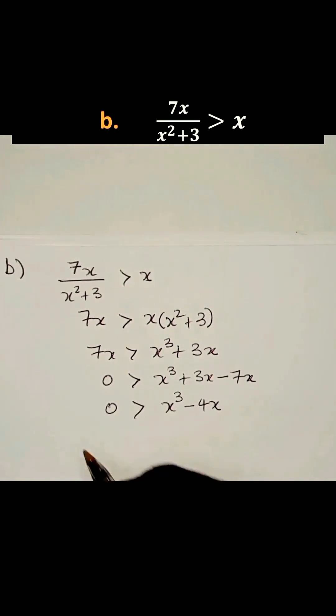I can just rewrite that inequality as x³ - 4x is less than 0. It is the same thing.